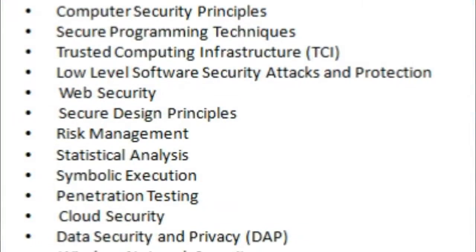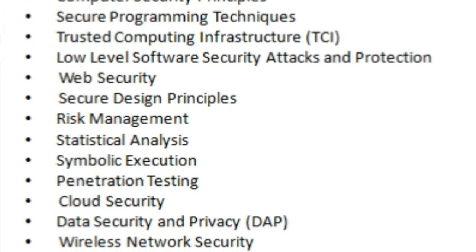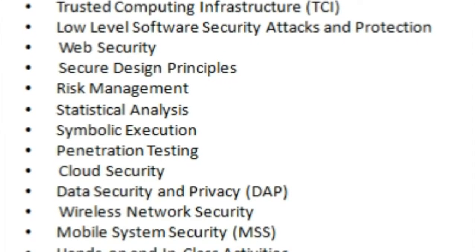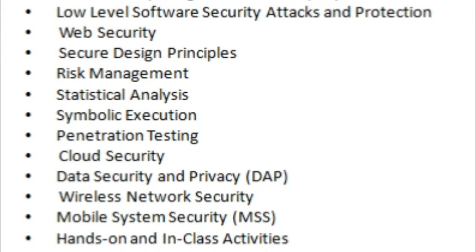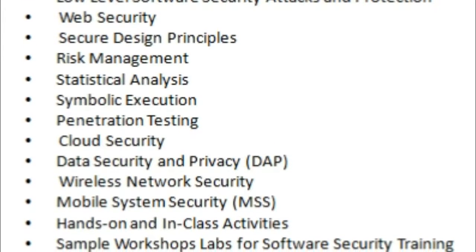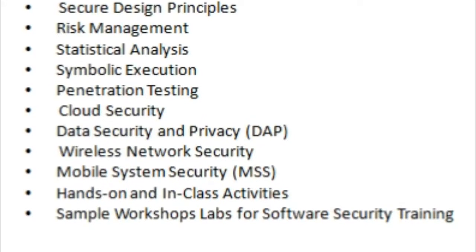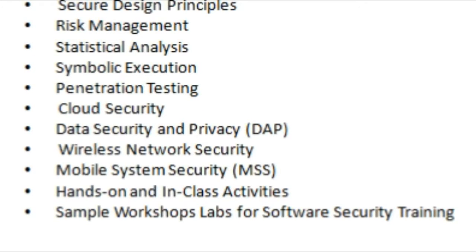The training outline consists of the following lessons, which can be revised and tailored to the client's needs: computer security principles, secure programming techniques, trusted computing infrastructure (TCI), low-level software security attacks and protection, web security, secure design principles, risk management, statistical analysis, symbolic execution, penetration testing, and cloud security.